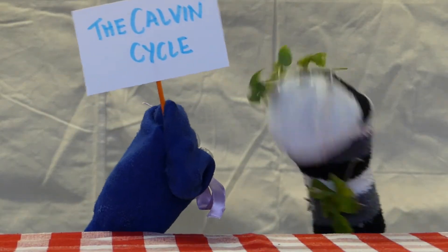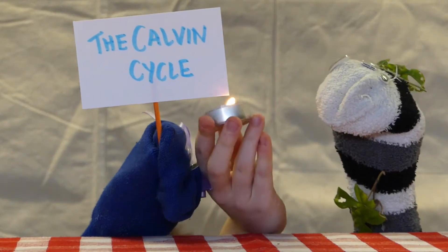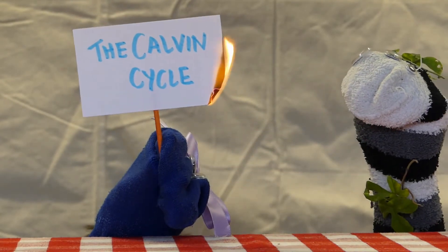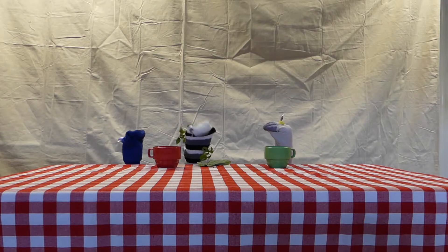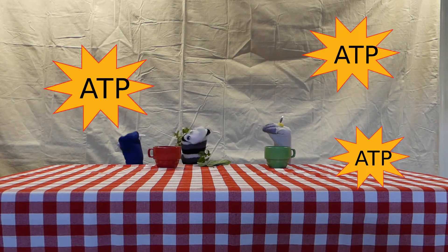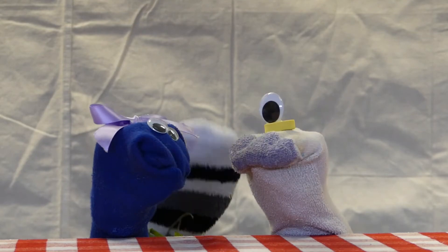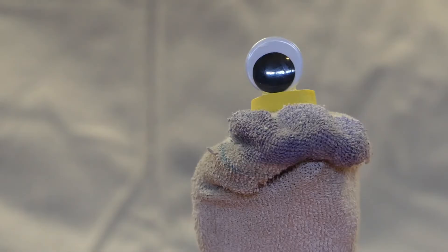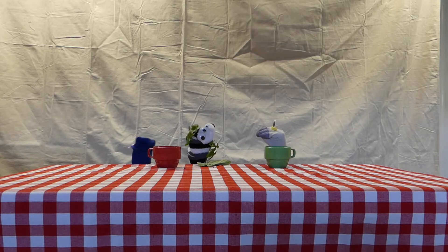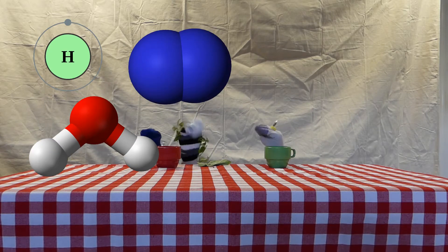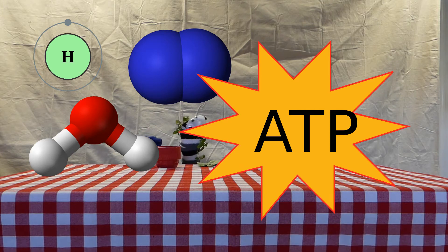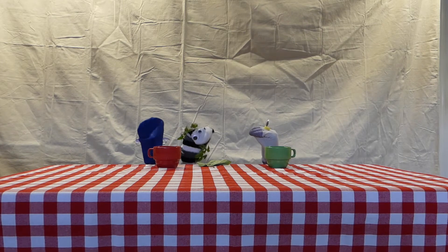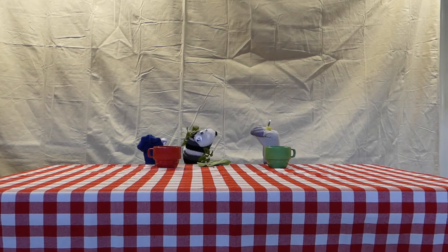I'm gonna go to the Calvin cycle now. Whoa there, friend, you might need to slow down. We don't have enough ATP. We only have to go through photosystem 2 — isn't it exciting? Come on, take another look: light is splitting water, there's oxygen and electrons, they're producing ATP that we need.